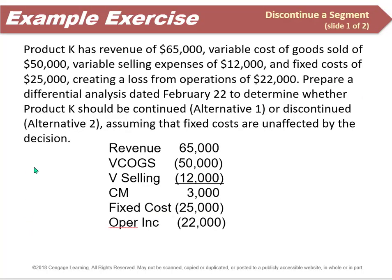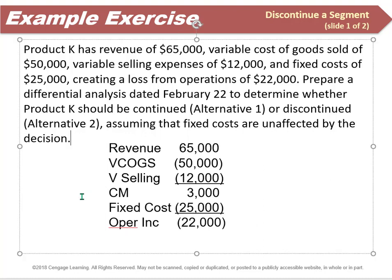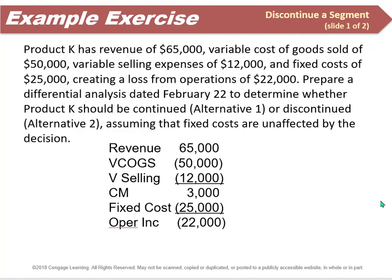Here's an example exercise with Product K. They've got revenue of $65,000, variable cost of goods sold of $50,000, and variable selling expenses of $12,000. They've also got fixed costs of $25,000. The variable costs and selling costs give us a contribution margin of $3,000. Then with fixed costs of $25,000, that gives us an operating loss of $22,000. So the question is: should we get rid of this product?